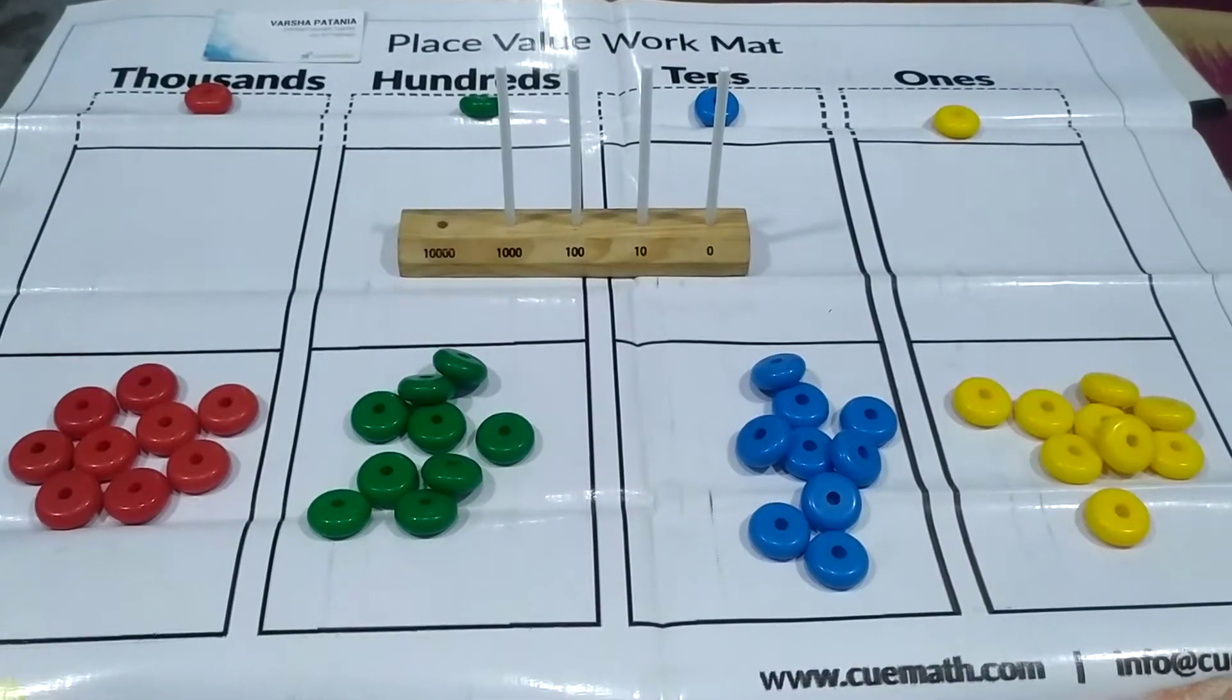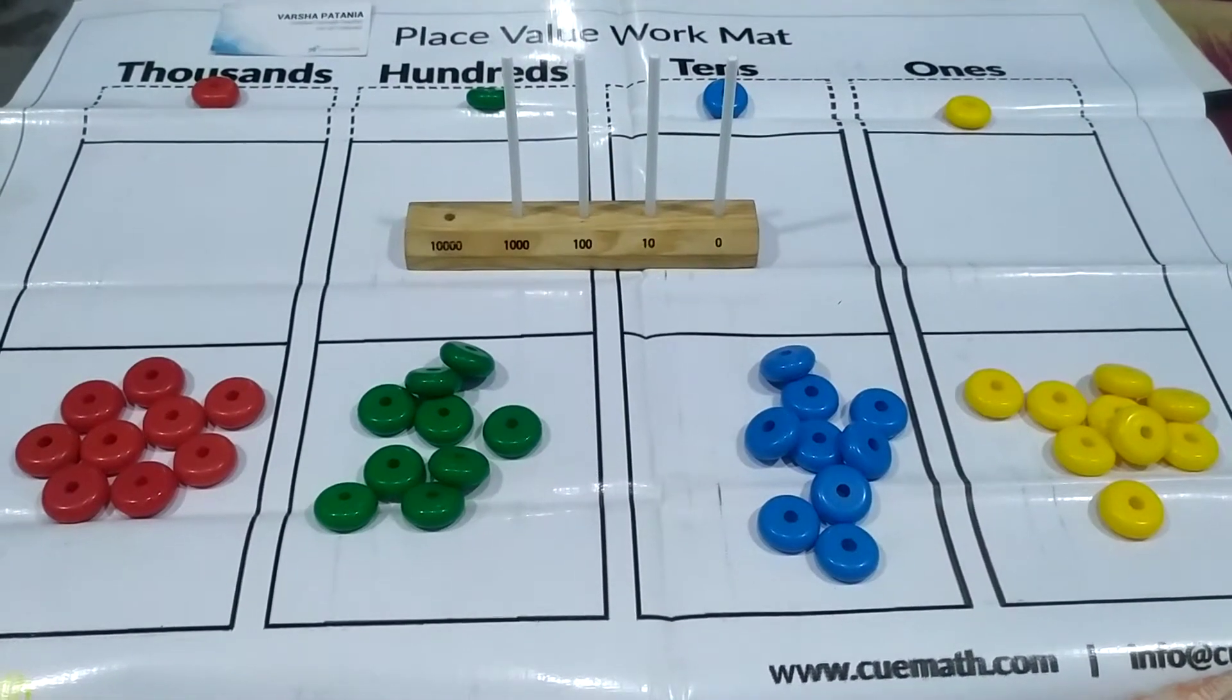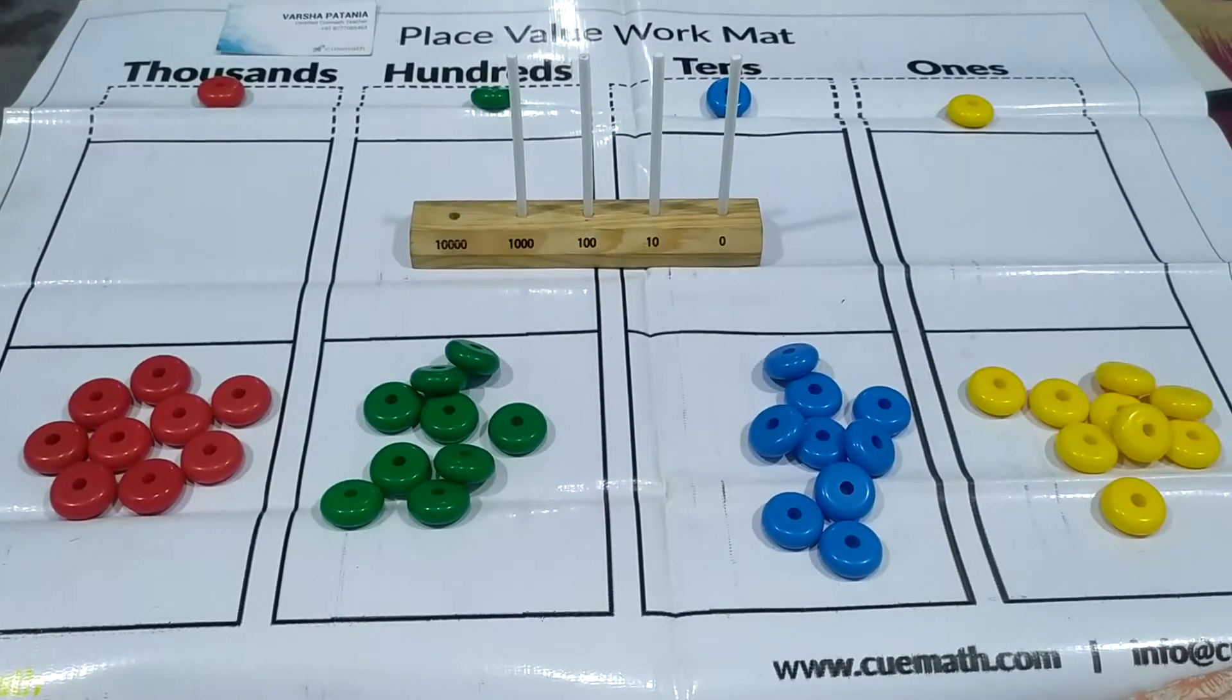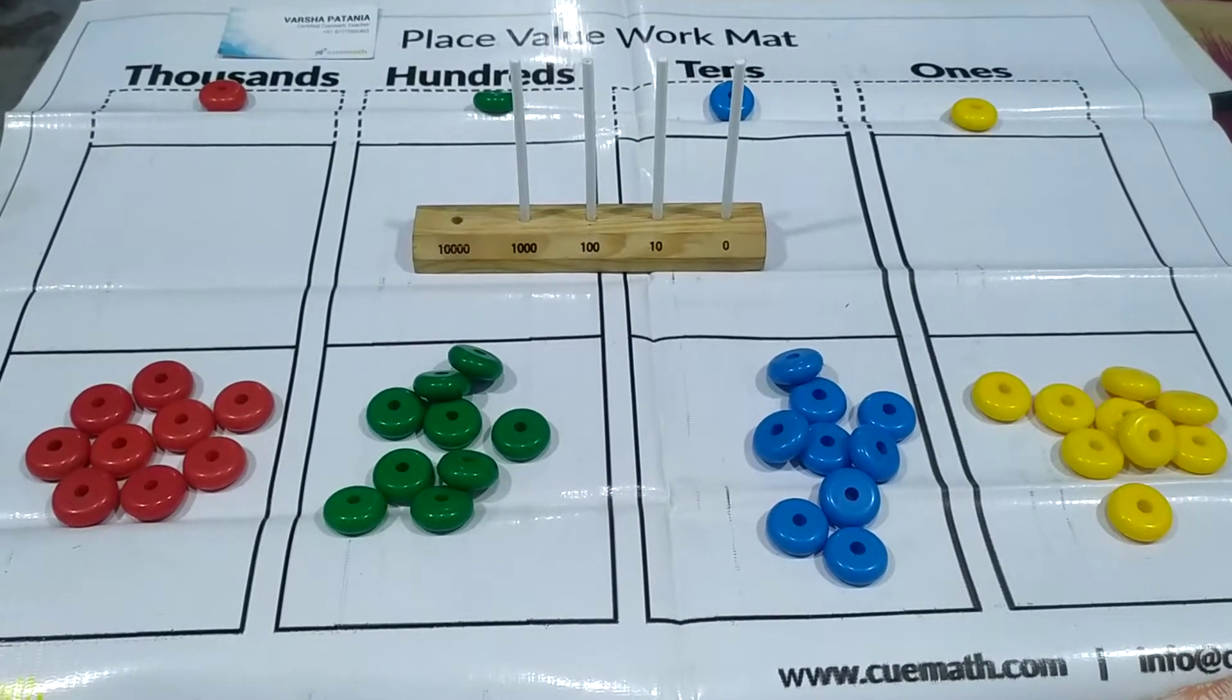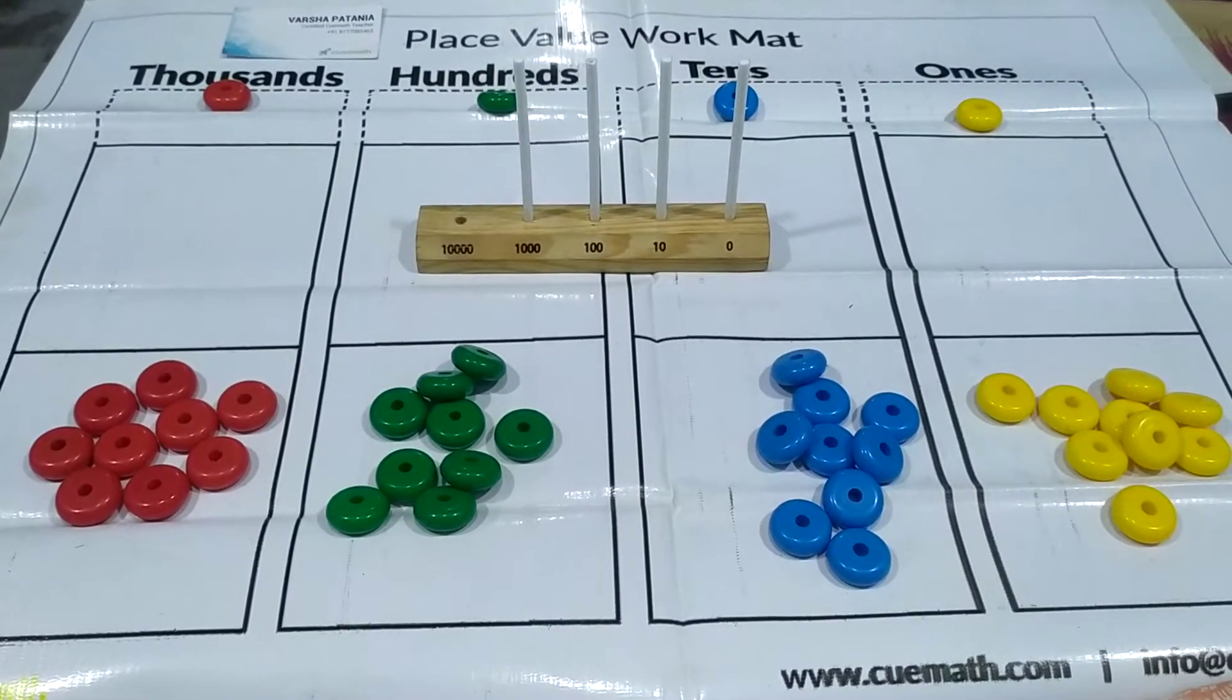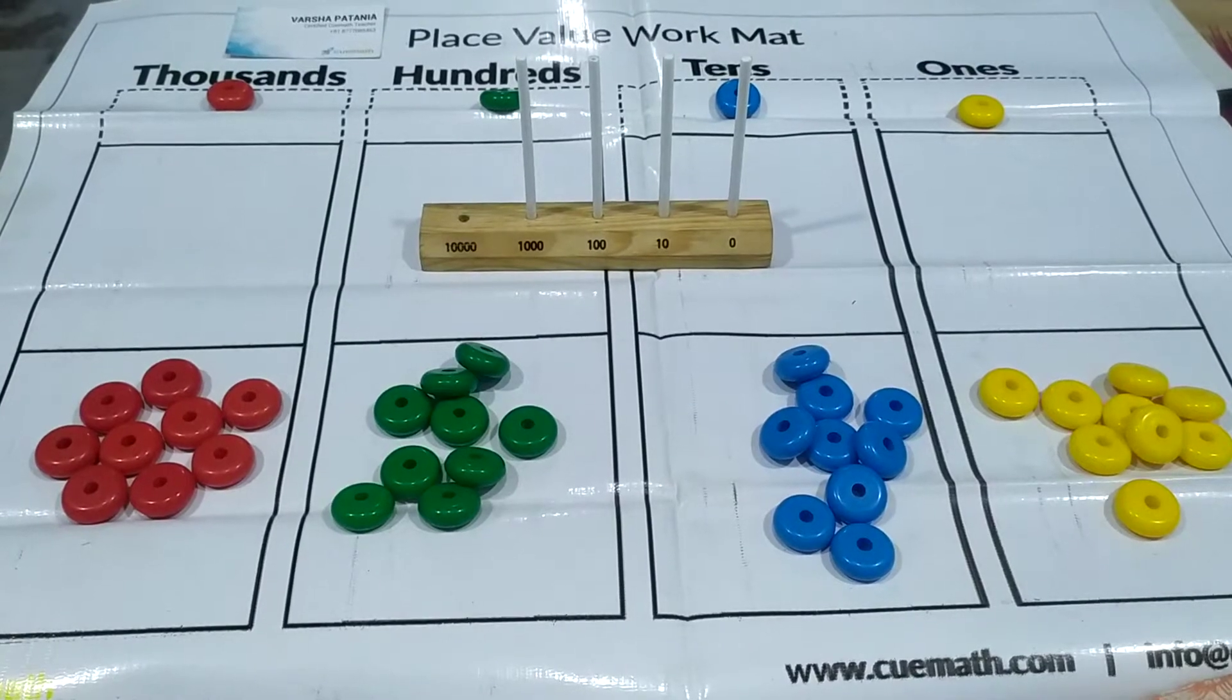So the yellow disk represents ones, the blue disk represents tens, the green disks represents hundreds and the red ones represents thousands.